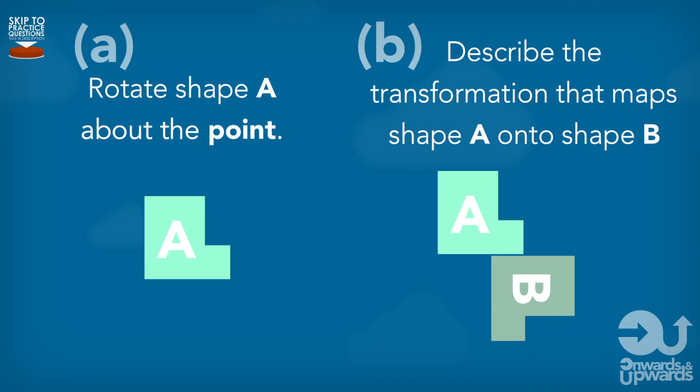The first type will ask you to rotate a shape about a given coordinate point, something like this. The second type will ask you to describe the transformation that has taken place that maps shape A onto shape B, basically asking you to find out what rotation has happened.